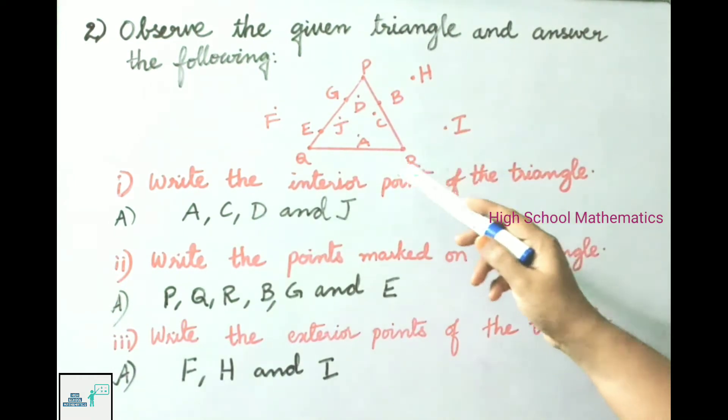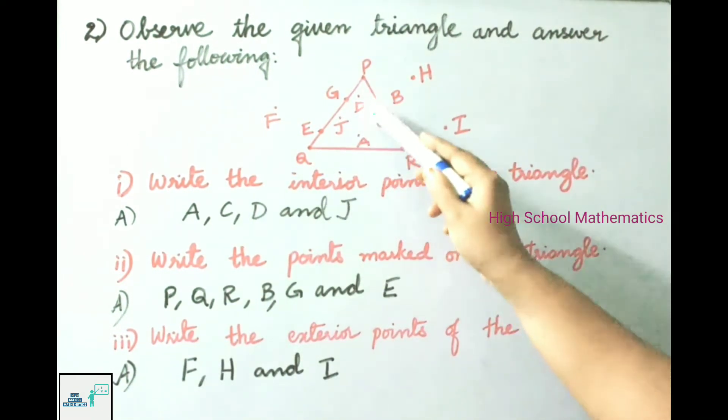In the given triangle, the points present interior were A, C, D, and J.